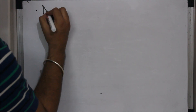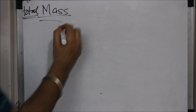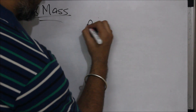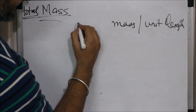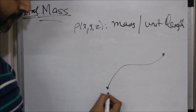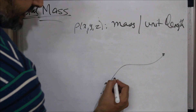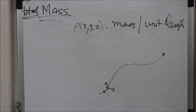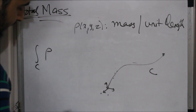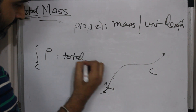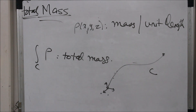Line integrals also help us find the mass of a wire. If rho is the mass per unit length of a wire, and you integrate rho over the curve C representing the wire, what you get is the total mass of the wire. So as long as you know rho, you can find the total mass. Note that mass per unit volume is called density, but here it is mass per unit length.